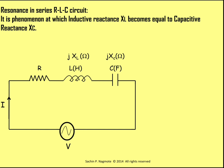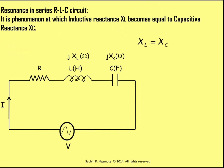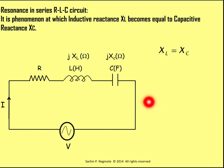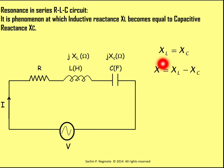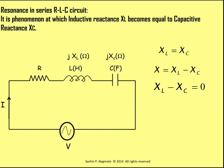The condition is: at the time of resonance, the inductive reactance XL becomes equal to capacitive reactance XC. So for resonance to occur in the series RLC circuit, XL must be equal to XC. The total reactance in the series RLC circuit is X = XL − XC. But as XL equals XC, XL − XC equals 0, and hence the total reactance in the circuit is 0.